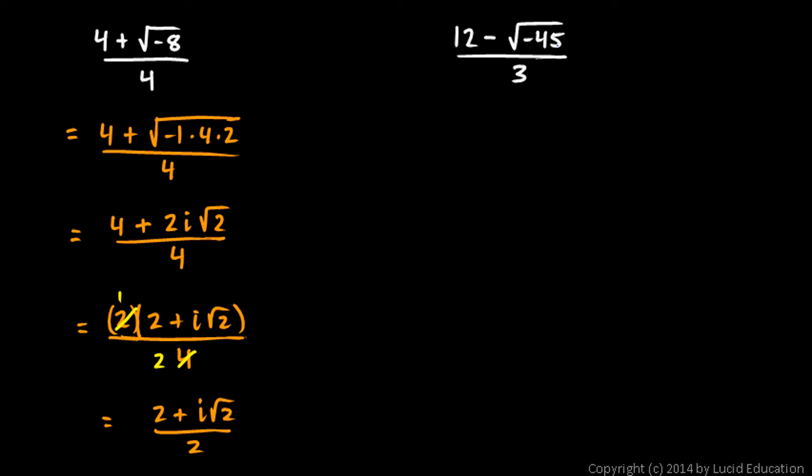And 45, you can factor that as 9 times 5. It would also factor as 15 times 3, but we're looking for factors that are perfect squares. So we're going to go with the 9 times 5. Let's rewrite our expression as 12 minus the square root of negative 1 times 9 times 5, all over 3.